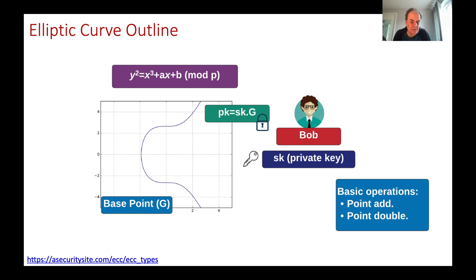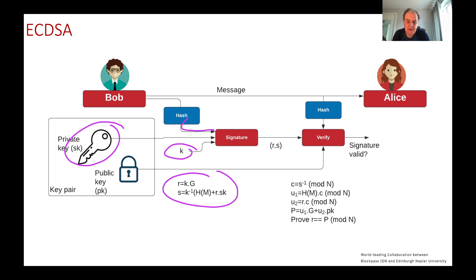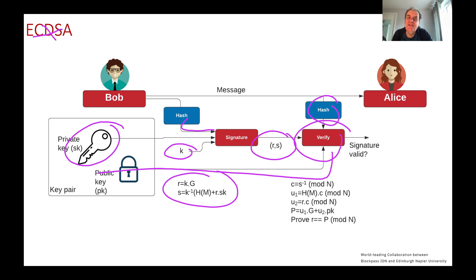For elliptic curve, we have a base point on the curve and a secret key. We then generate another point on the curve, which is the secret key times the base point. The secret key is kept private and the public key is made public. One of the most popular applications is the elliptic curve digital signature algorithm (ECDSA). Bob signs a message with his private key, using a random nonce and a hash of the message, computing signature values r and s. Verification uses Bob's public key and the hash of the message. Unfortunately, ECDSA will be vulnerable to quantum computers.